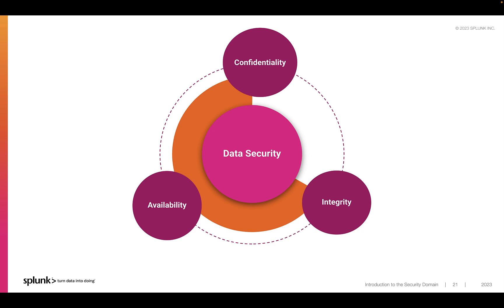Integrity ensures that you can trust the data — that it hasn't been maliciously tampered with, it is accurate, consistent, and it can only be changed in valid situations. Aside from authorization mechanisms to limit who can modify data, one-way hashes can be used to confirm the integrity of a file, for example. Or maybe you've heard about blockchain technology?